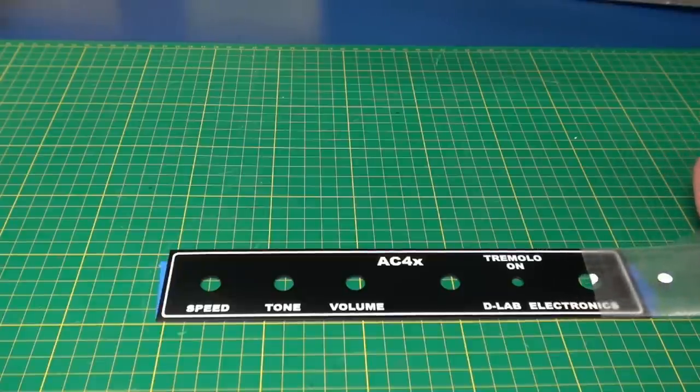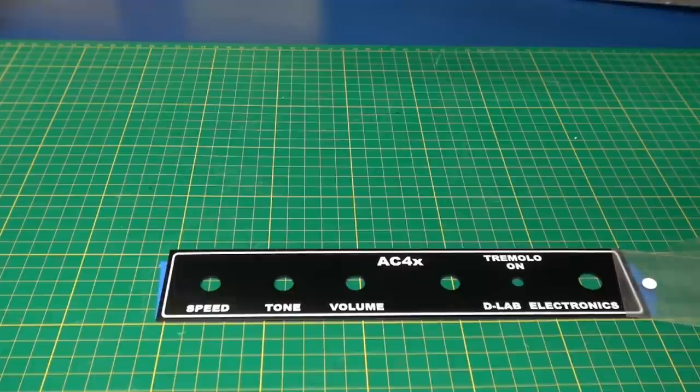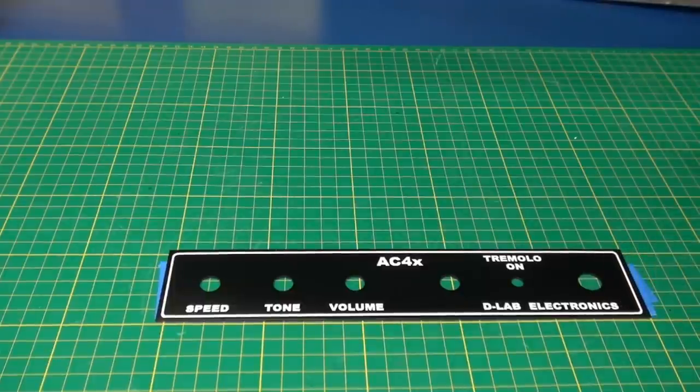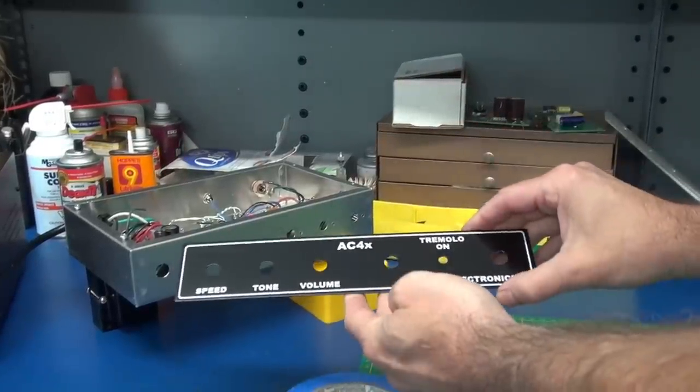Getting close. Now when you come off of this, you want to kind of go at an angle. There we go. That's it. Alright, now let's get the panel installed on the amp and see what it looks like.